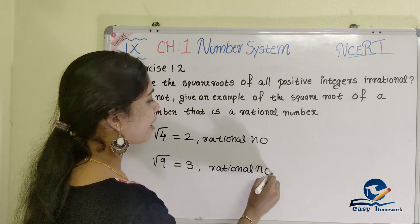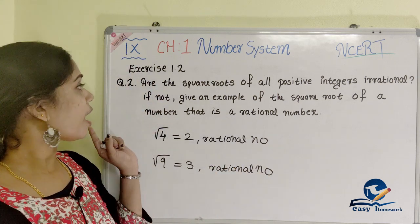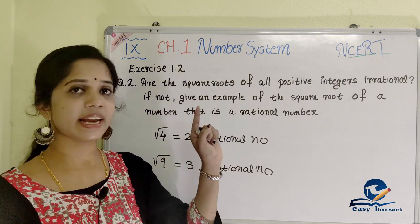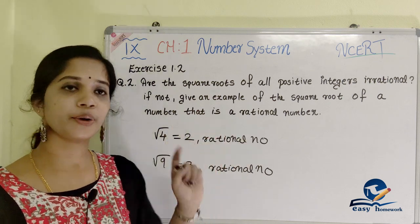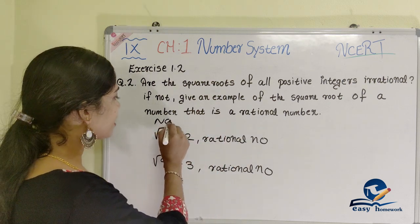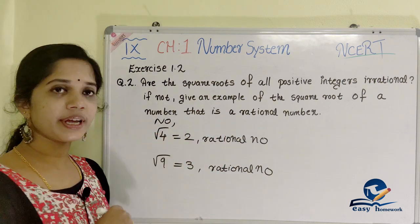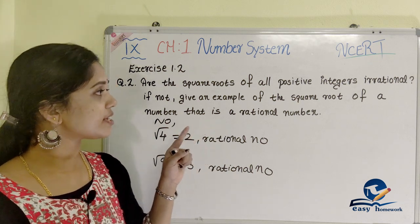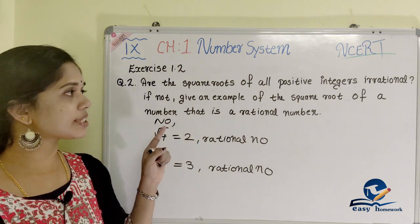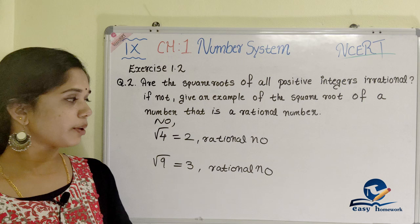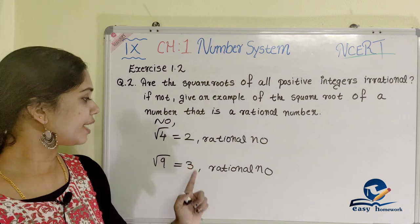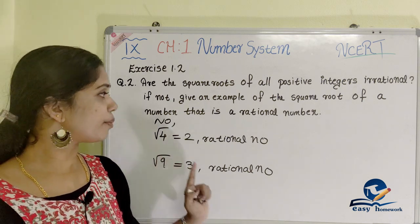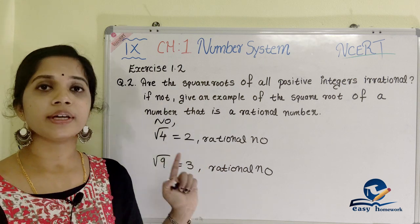Next, root 9 — the answer is 3, which is also a rational number. So, are the square roots of all positive integers irrational? No. We can see rational number examples from the square roots of positive integers.